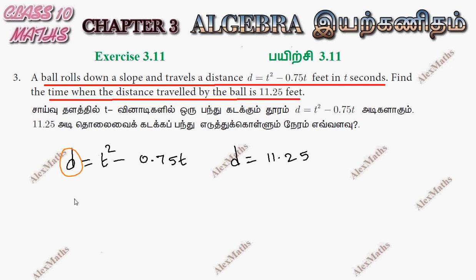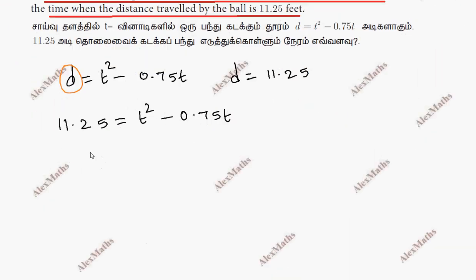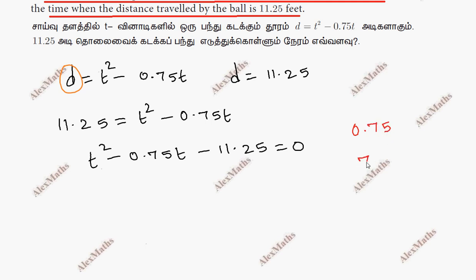The distance equation is d equal to t squared minus 0.75t. The distance traveled value is 11.25 feet, so we substitute d with 11.25. This gives us t squared minus 0.75t minus 11.25 equal to 0.